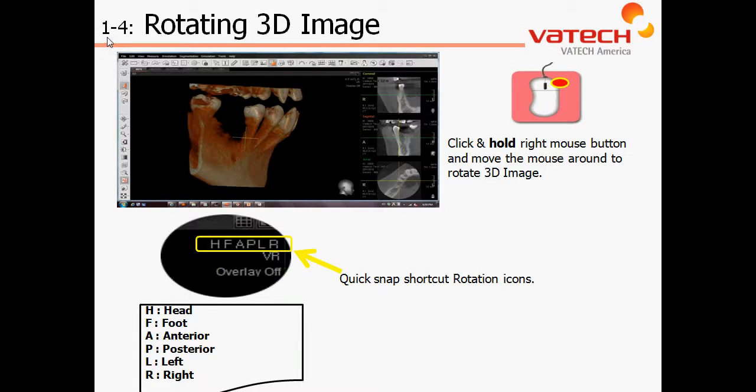Moving on to chapter 1, section 4: rotating our 3D image. We have a number of different options to perform this.